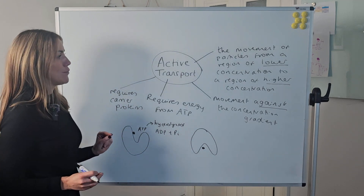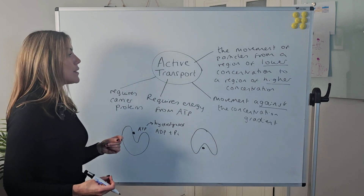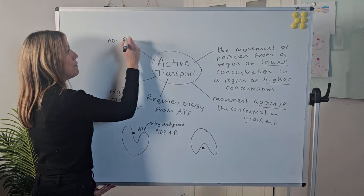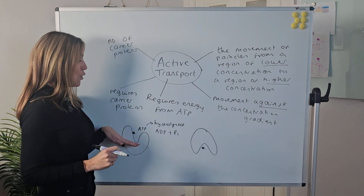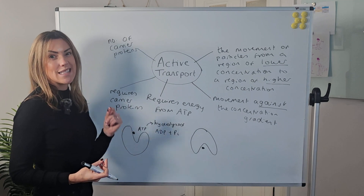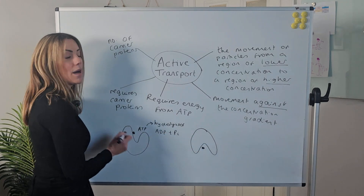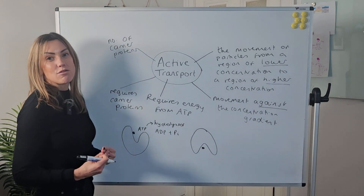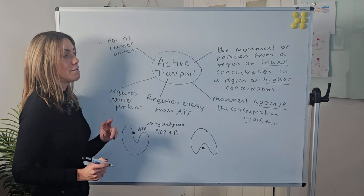Let's think about some of the factors that affect the rate of active transport. One factor is the number of carrier proteins — if there are more carrier proteins embedded in the cell surface membrane, more active transport can take place at one time. Active transport is often limited by the number of carrier proteins, because if they are all saturated or all in use, the rate of active transport cannot speed up. So the number of carrier proteins can be a limiting factor.